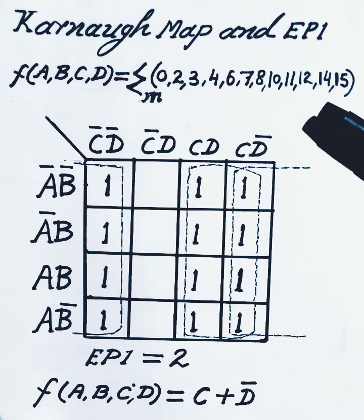We have function f(A,B,C,D) with minterms 0, 2, 3, 4, 6, 7, 8, 10, 11, 12, 14, 15.